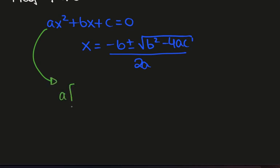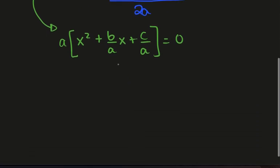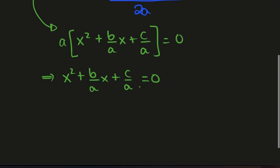From this we'll factor out the a, and we'll have a times x squared plus b over a times x plus c over a equals zero. Now we'll divide by a, since a is not zero, so we have x squared plus b over a times x plus c over a equals zero, because zero over a is zero, so we can just get rid of the a.